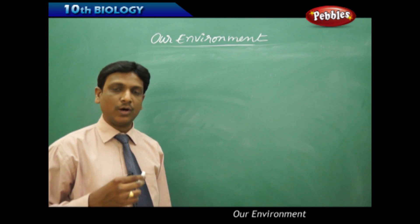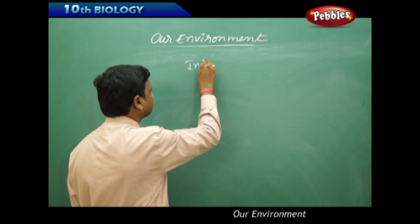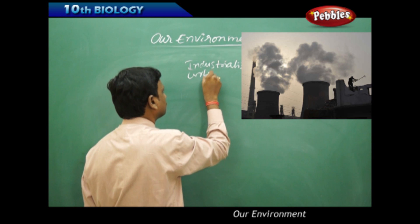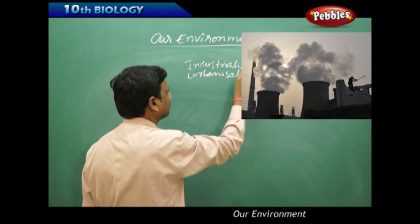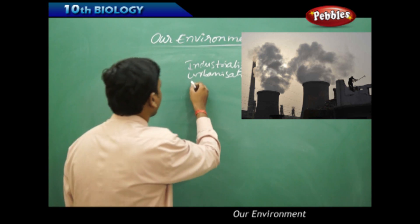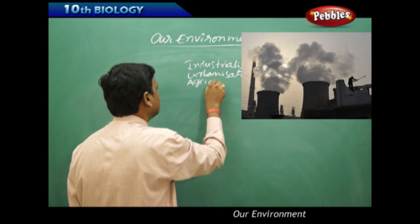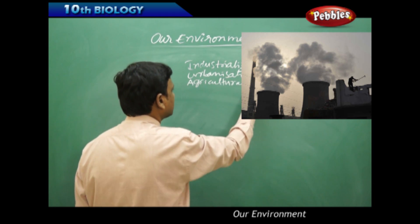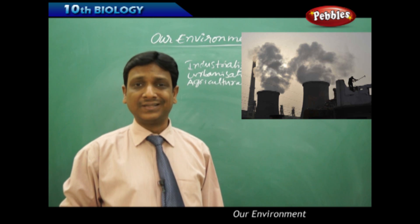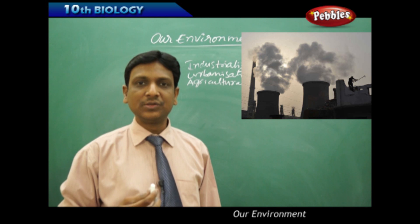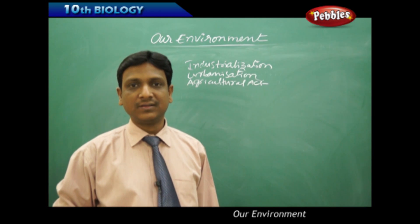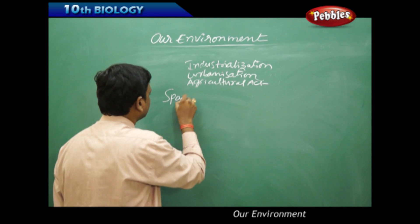We have seen how human activities like industrialization, urbanization, and over-exploitation of land for agricultural activities led to disturbance in nature. Moreover, we see one more rare incident where the over-ambiguity of people also led to great damage to the environment and led to the great Chinese famine. That was the sparrow campaign that happened in China.